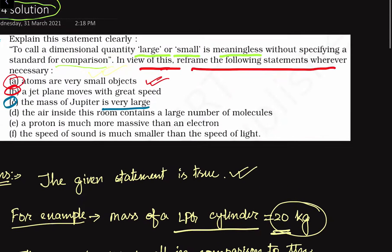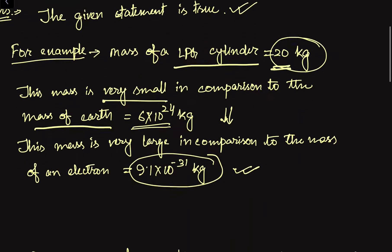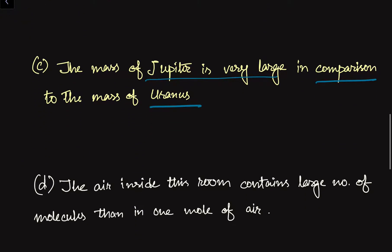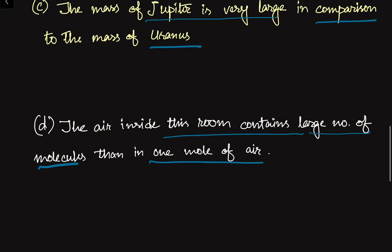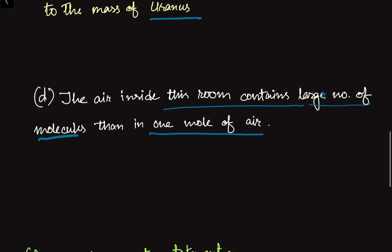Now let us go to our fourth statement. We are given that the air inside this room contains a large number of molecules. The total number of molecules inside this given room is very large. We have to give some reference. The air inside the room contains a large number of molecules compared to one mole of air. So in one mole comparison, the air inside this room has a larger number of molecules than one mole of air.